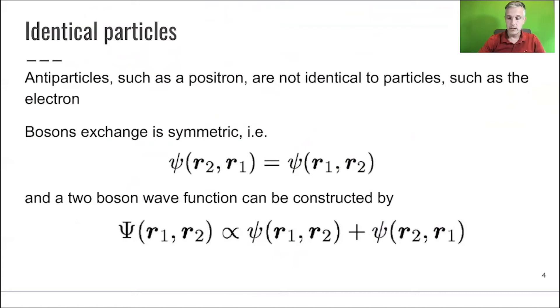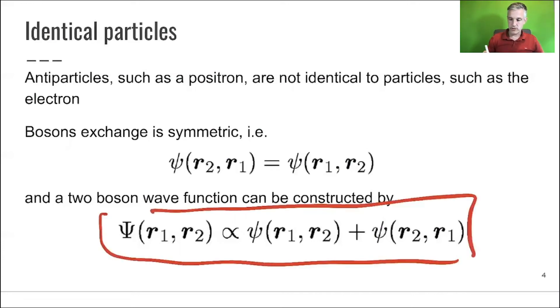If you move on to bosons, boson exchange is symmetric, meaning that if you look at bosons, you find the identical wave function. And then constructing a two boson total wave function, you do this by adding those two functions together. This is by definition symmetric.